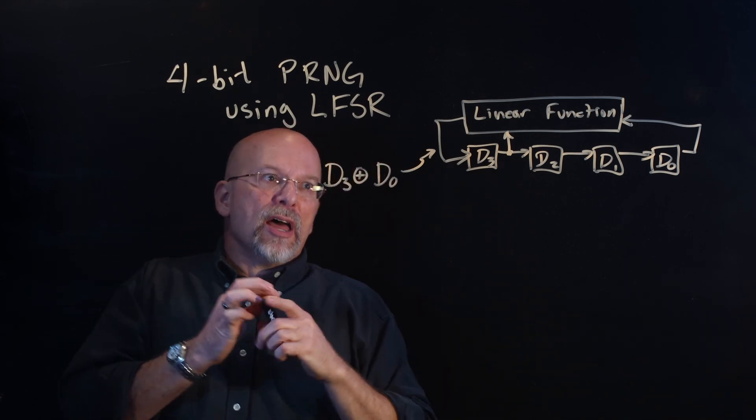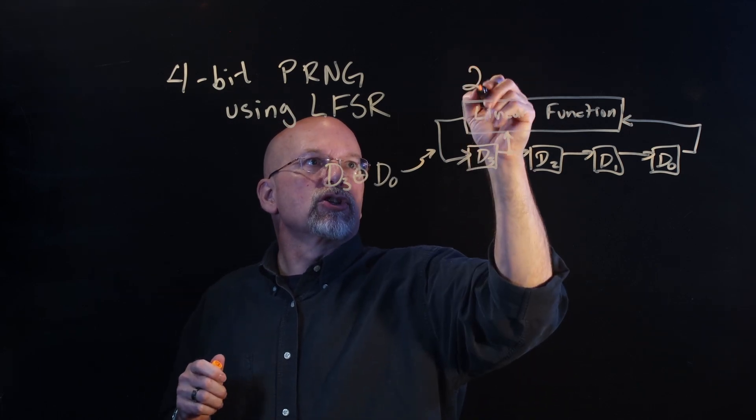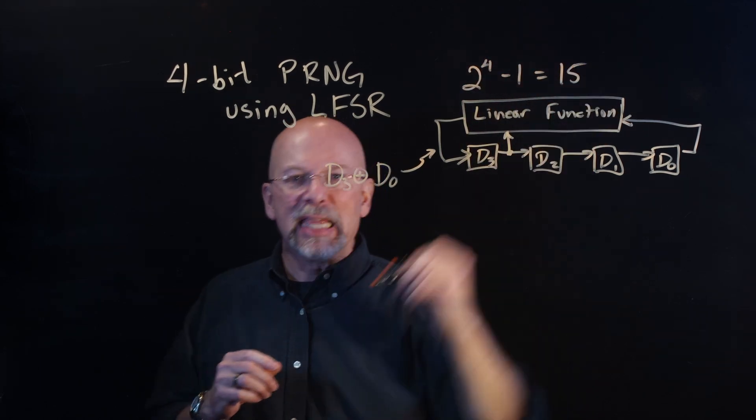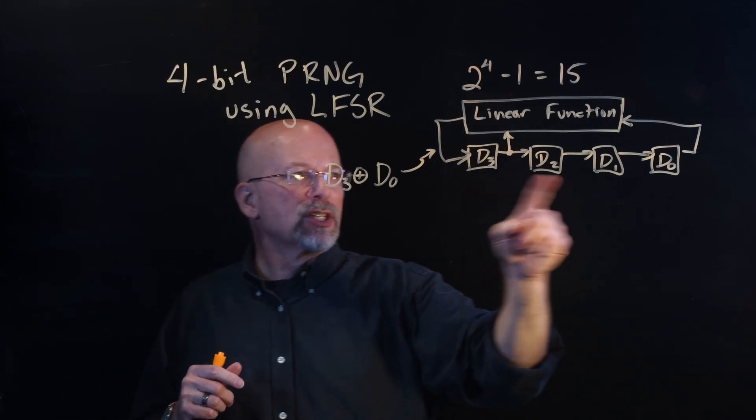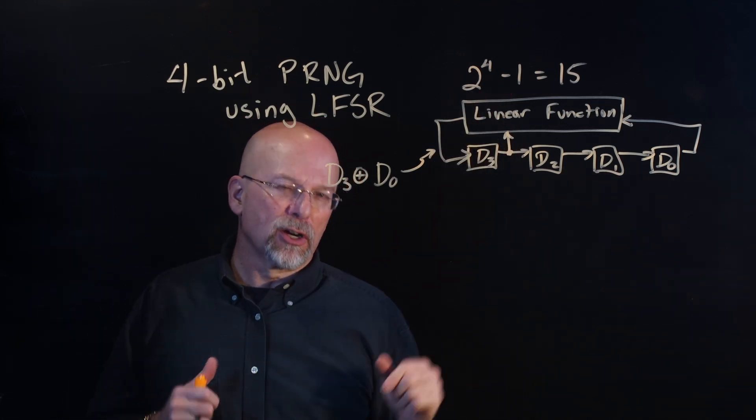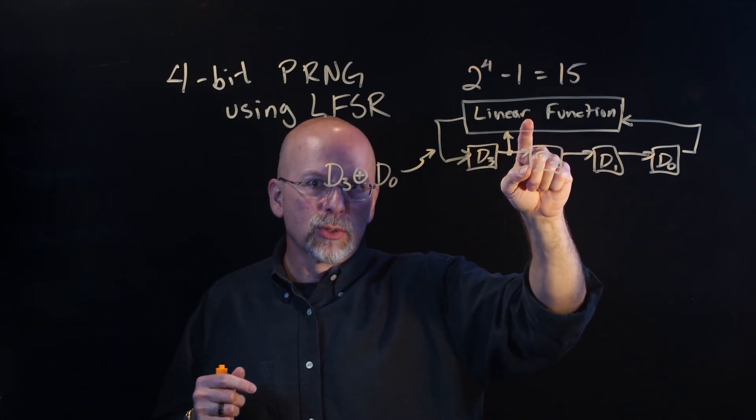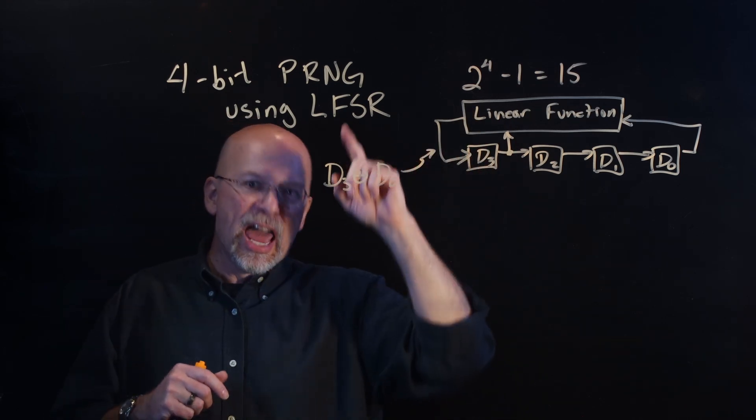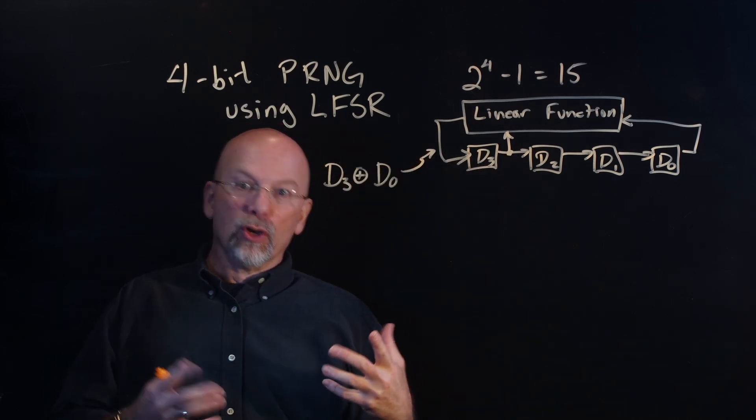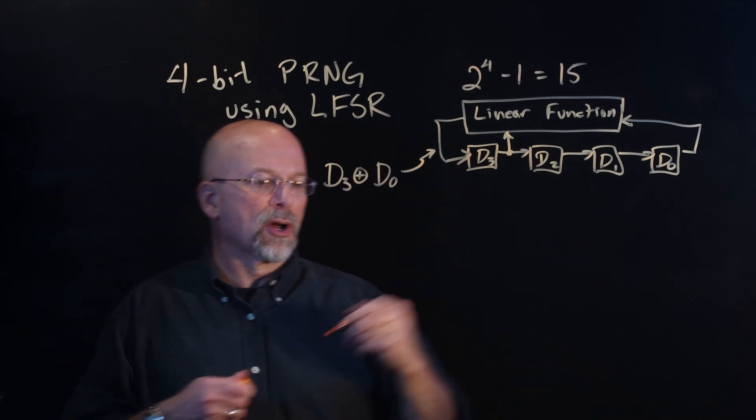Remember that this is going to give us the sequence that is 2 to the 4th minus 1, which is equal to 15. What is the minus 1? The minus 1 is the all zeros case. We can't fill our shift register with all zeros, or all zeros going into an exclusive OR function is going to give us a 0, and it'll get stuck at all zeros. That will give us a loop with a period of 1.